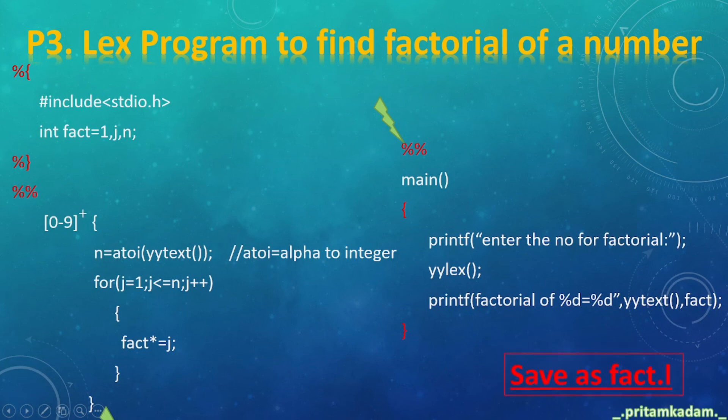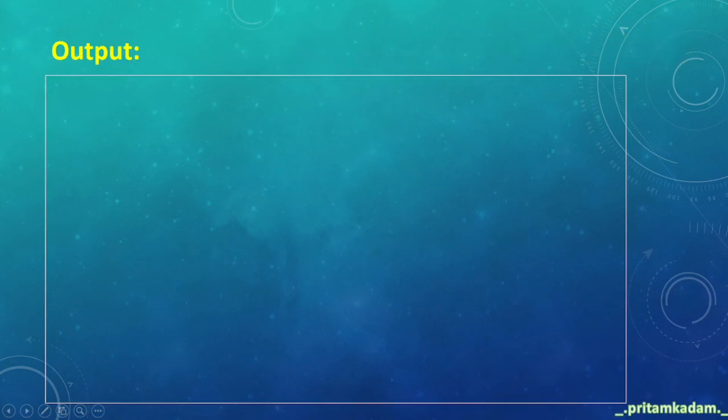Now let's run this. First, we have to save this as fact.l. Now in command line, first I have to compile that lex file: lex fact.l. Then it will be compiled by the lex compiler. Now I have to compile that lex.yy.c part, so C compiler and then -ll, means that is lex library.